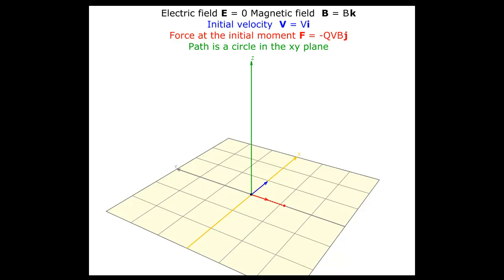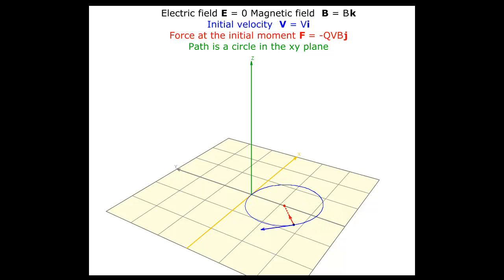The plane of circular motion is perpendicular to the magnetic field, which is along the z-axis, and this is the x-y plane in this case. Notice the red force vector always pointing towards the center on the negative y-axis.